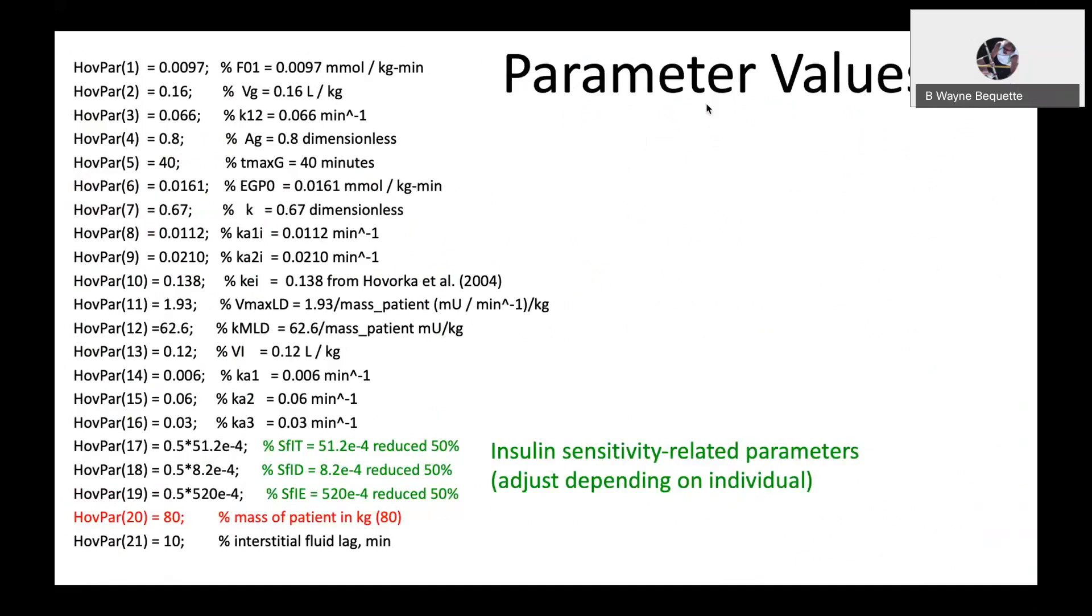There's a large number of parameter values. Most of these are taken from the publications of Roman Hovorka, but I should note there are three parameters that we use that are based on insulin sensitivity and may change those to make an individual either more or less sensitive to insulin. And then one of the major parameters is the actual mass of the individual.